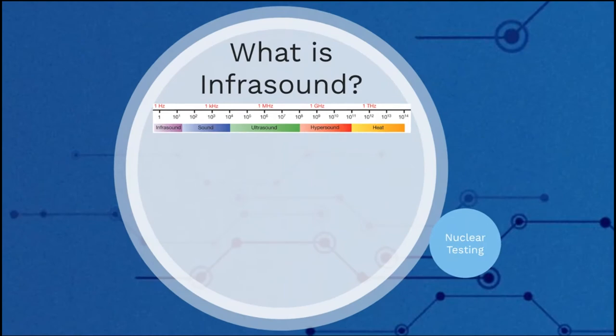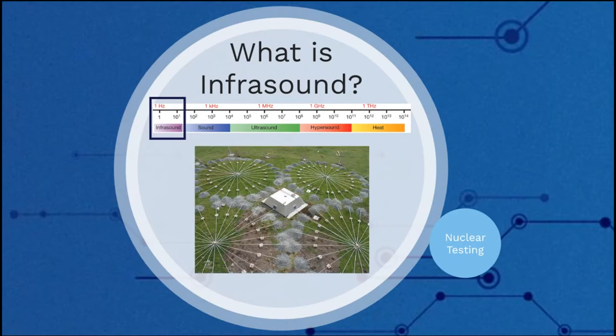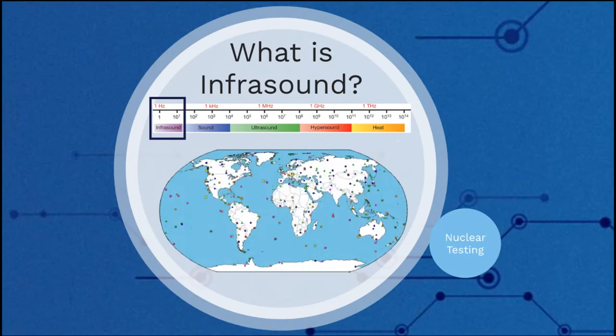Infrasound waves are acoustic waves that are below the range of human hearing, around 20 hertz. Since these waves have a low frequency, they can travel long distances. There are hundreds of devices called arrays all over the world that constantly record infrasound data.